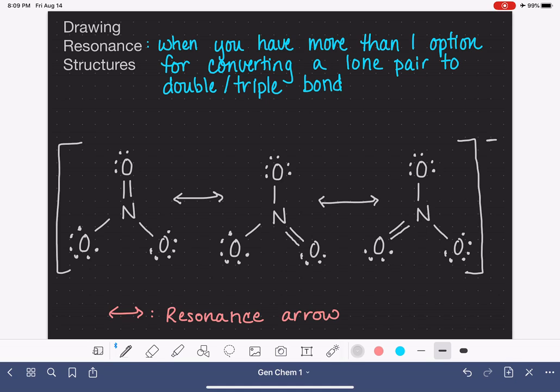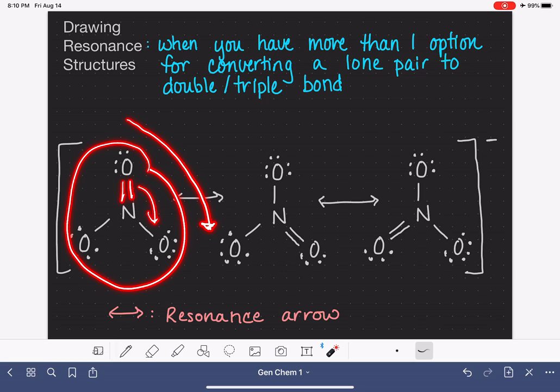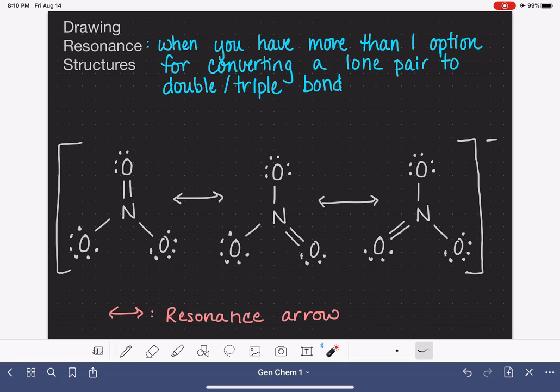So before I finish this video, I want to say that you might be looking at these three structures here and saying, what actually is the difference between these three? Because if I take this structure here and I just rotate it a little bit clockwise, I end up moving this double bond down to this position. So because of that, in fact, aren't these two structures actually identical to each other?